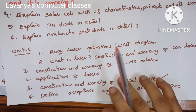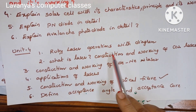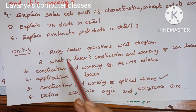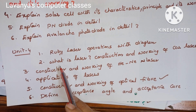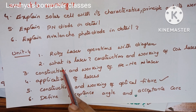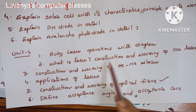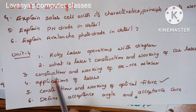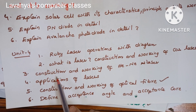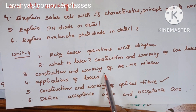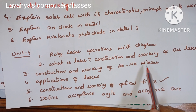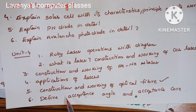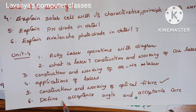Unit 4 questions: First question is explain ruby laser operations with diagram — explain what is a laser and ruby laser. Second question is construction and working of CO2 laser. Third question is construction and working of He-Ne laser. Applications of lasers — all are important questions.